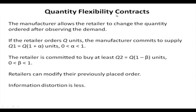In quantity flexibility contracts, the manufacturer allows the retailer to change the quantity ordered after observing demand. If the retailer orders Q units, the manufacturer commits to supply up to alpha times Q beyond the amount ordered, and the retailer is committed to buy at least beta times Q less than the order amount. Retailers can modify their previously placed orders under this contract, and the distortion of information regarding customer orders is less compared to other contracts.